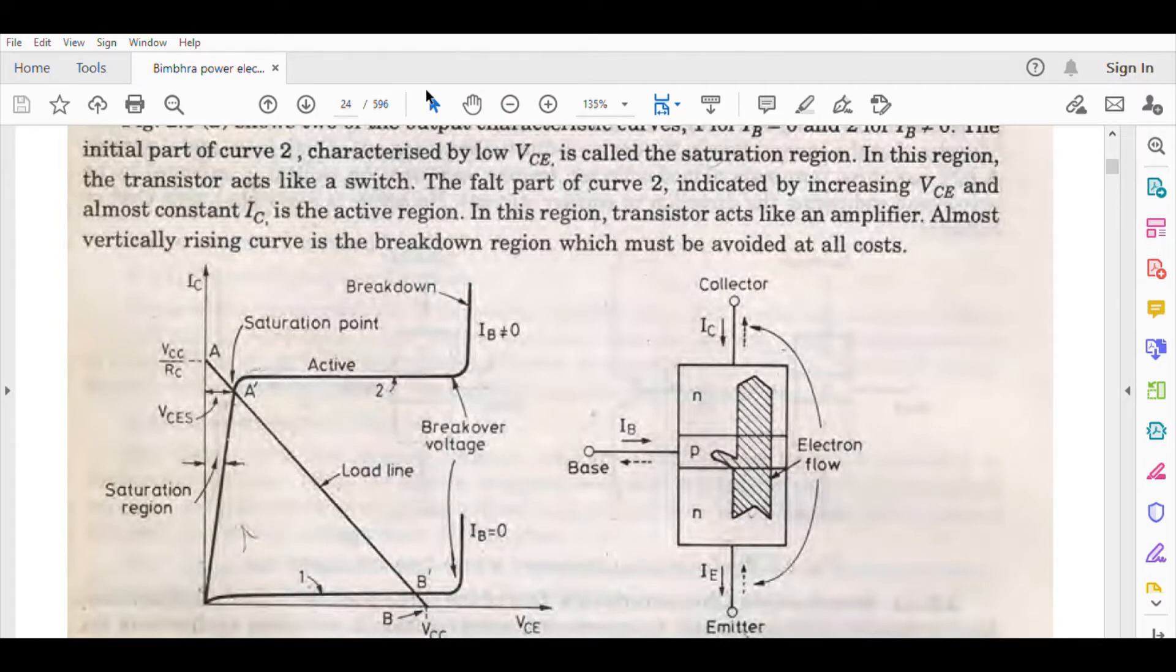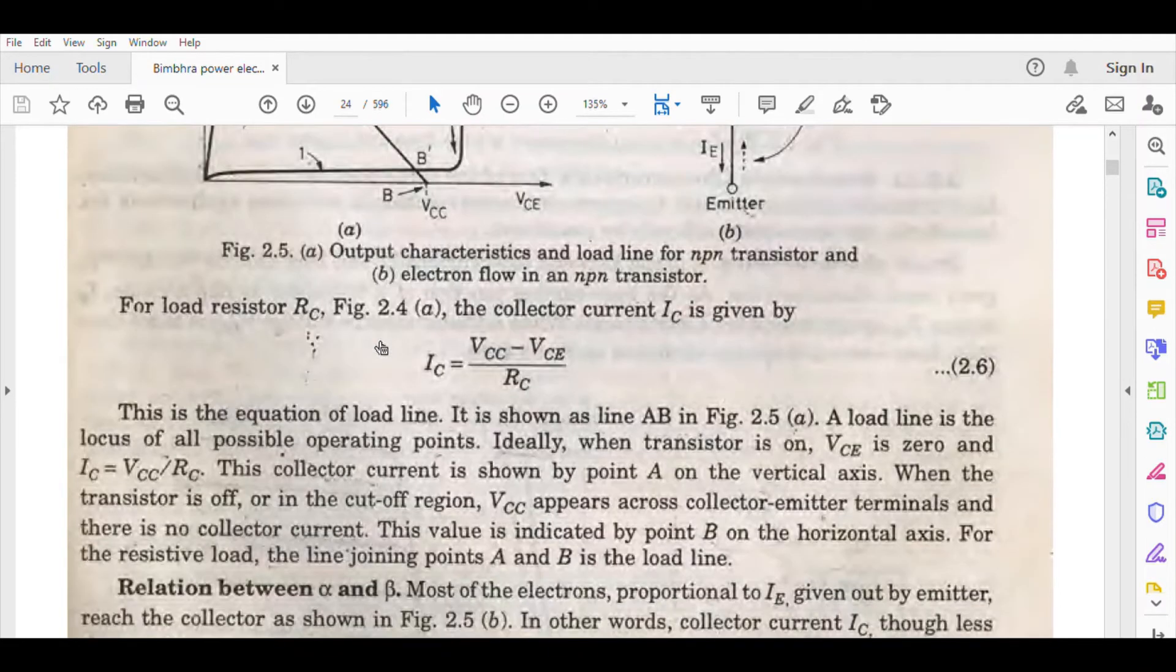The flat part of curve 2, indicated by increasing VCE and almost constant IC, is the active region. In this region, the transistor acts like an amplifier. You also know the load line, where is the saturation region, where is the active region.